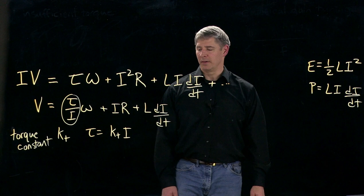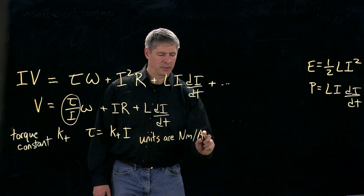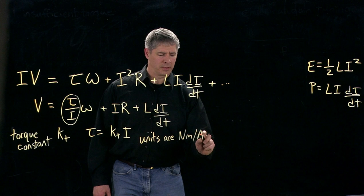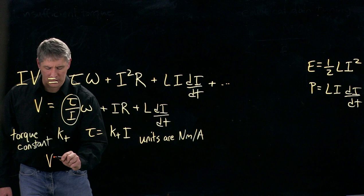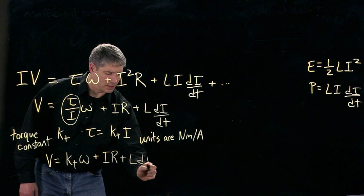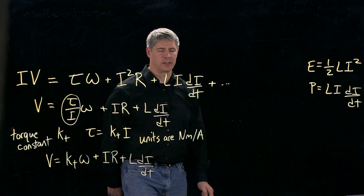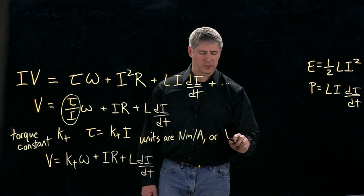And if we look here in this equation, we can see that the units of the torque constant are Newton meters per amp. But if we then write this equation again here using the torque constant. So V is equal to K T times the angular velocity of the motor plus IR plus LDI dt. We can see also that the units of the torque constant can be written in SI units as volt seconds per radian.